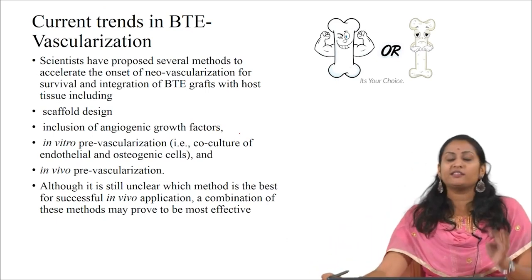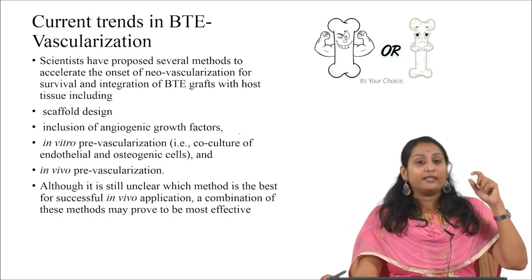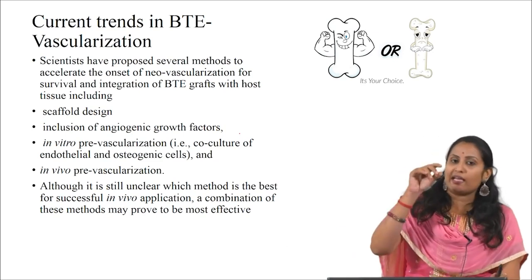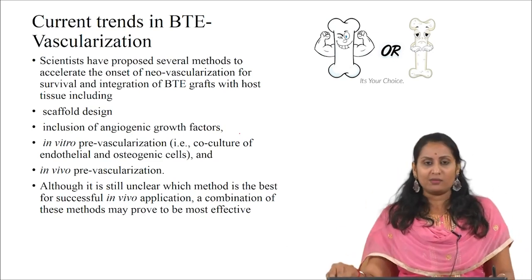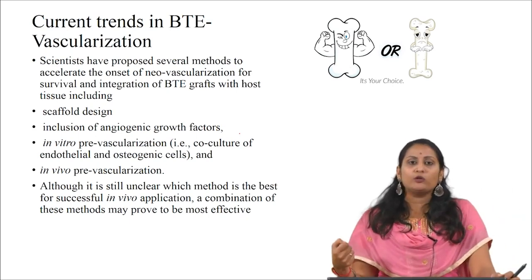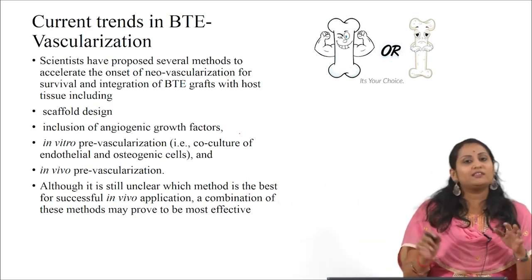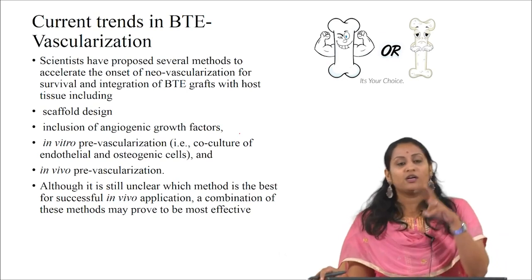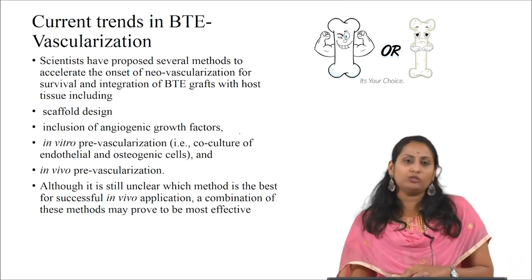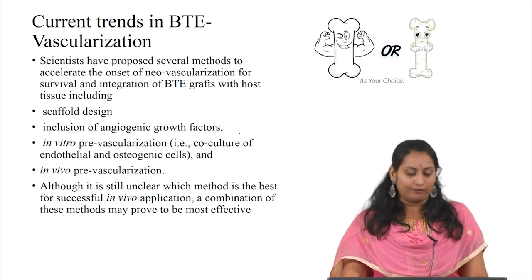In vivo prevascularization has two modes: the first involves placing the scaffold in a vascularized area — subcutaneously or intramuscularly — for two weeks, harvesting it, then placing it at the bone defect site. However, this method requires two surgeries, involving significant pain, time, and risk. The second method involves inserting blood vessels such as jugular veins inside the construct before in vivo placement, which appears more successful, although the optimal approach remains unclear.